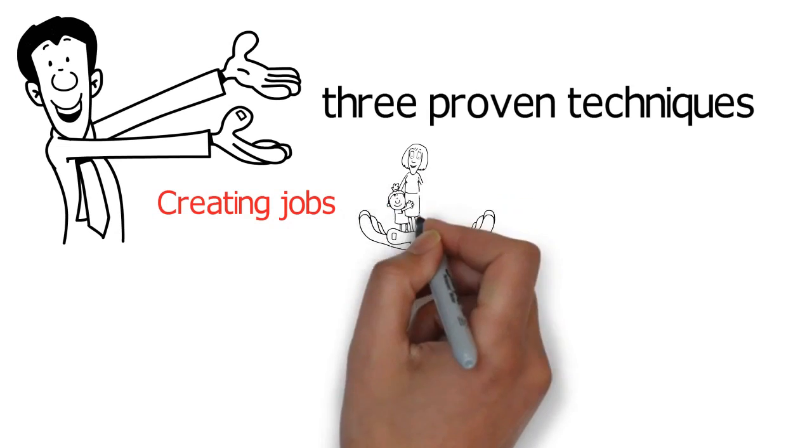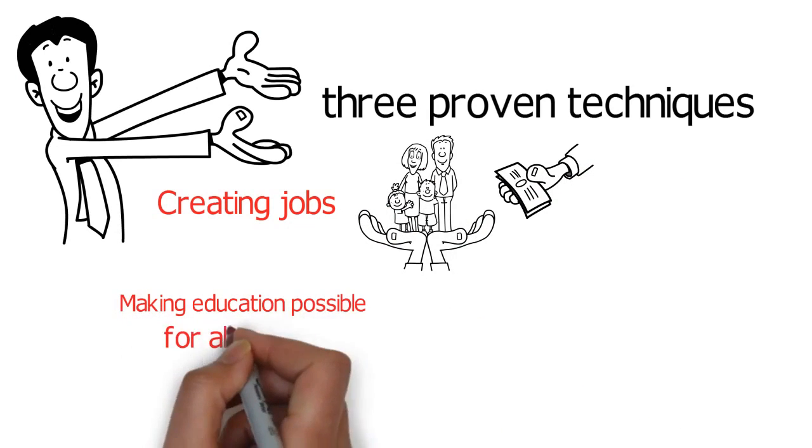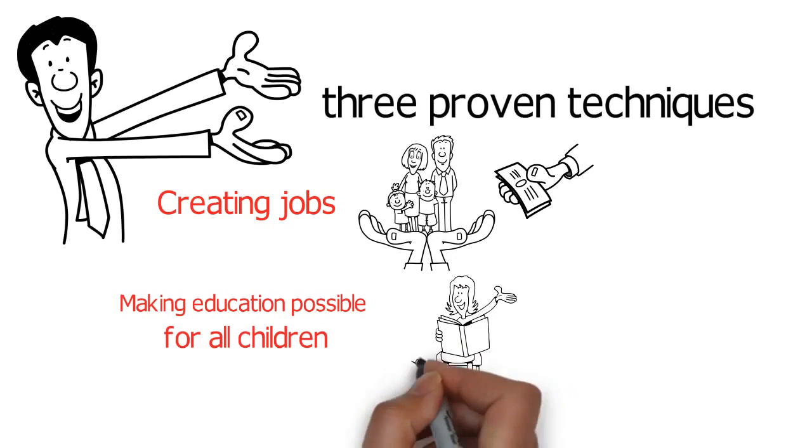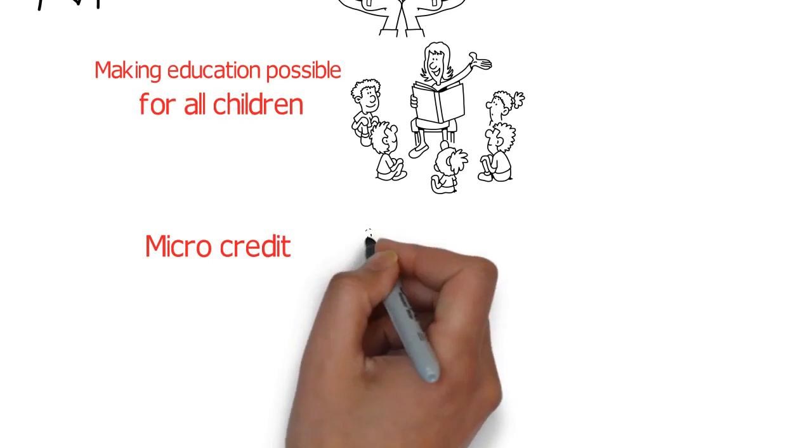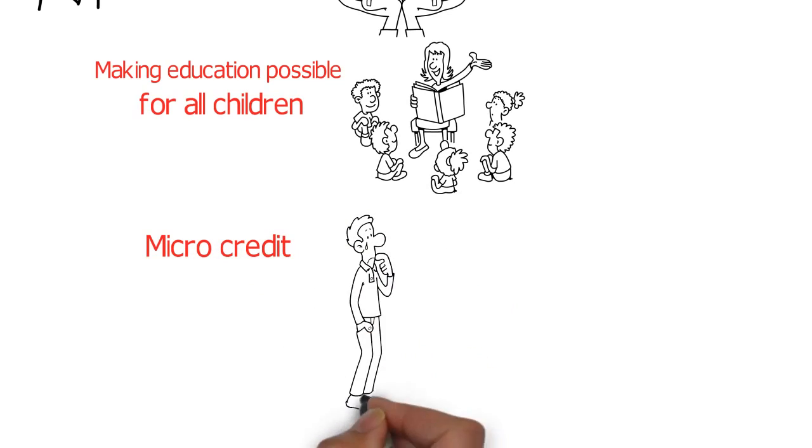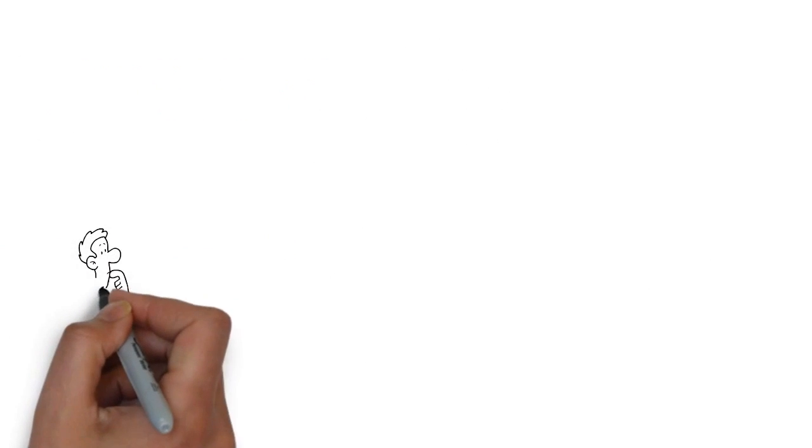Creating jobs that brings income to families. Making education possible for all children. No country has ever taken its people out of poverty without educating them first. And microcredit, so that poor farmers can grow their business and take themselves out of poverty. If you buy trees today, the seedling are planted.